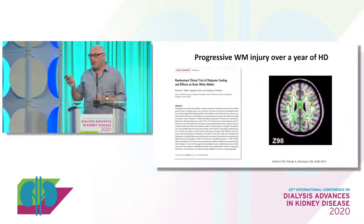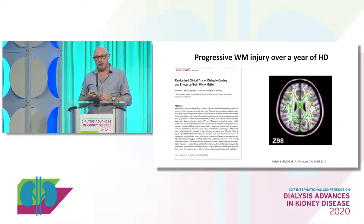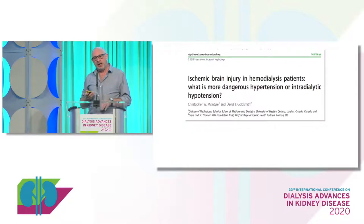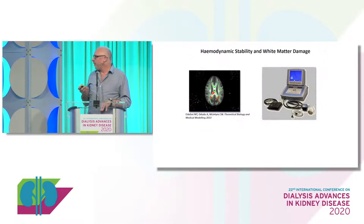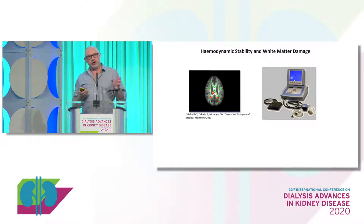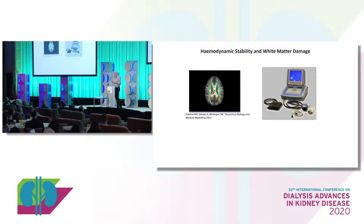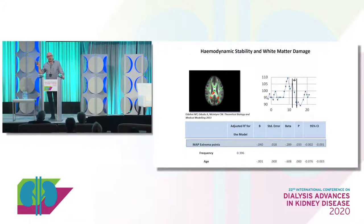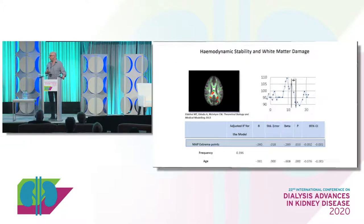We know that these injuries are progressive — these red areas are new white matter injury over a 12-month period. And we know it's intrinsically linked to the dialysis itself. When we measure blood pressure every single heartbeat during dialysis, we can create a mathematical treatment of how unstable the blood pressure was. We find that the most important and dominant factor determining the degree of injury is how unstable blood pressure was on dialysis.